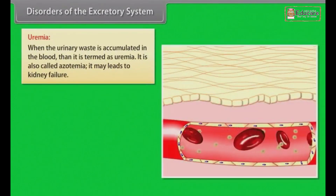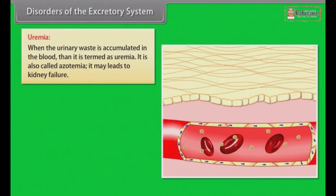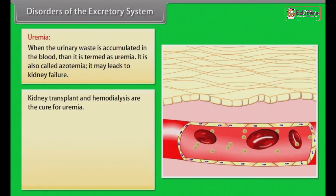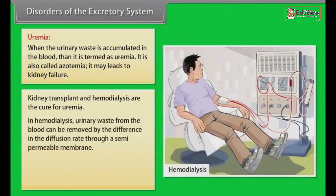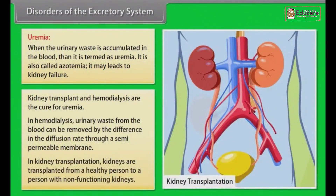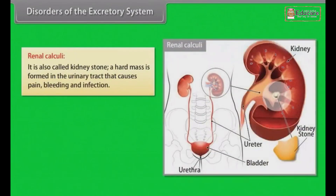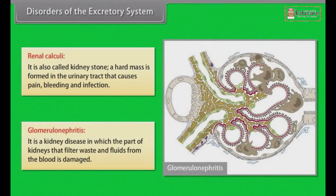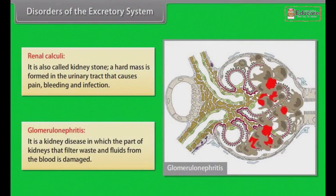Disorders of the Excretory System: Uremia — when urinary waste accumulates in the blood, it is termed uremia, also called azotemia, which may lead to kidney failure. Treatment includes kidney transplant and hemodialysis. In hemodialysis, urinary waste is removed from the blood by differences in diffusion rate through a semi-permeable membrane. In kidney transplantation, a kidney from a healthy person is transplanted to a person with non-functioning kidneys. Renal calculi (kidney stones) — a hard mass formed in the urinary tract causing pain, bleeding and infection. Glomerulonephritis — a kidney disease in which the part of the kidney that filters waste and fluids from the blood is damaged.